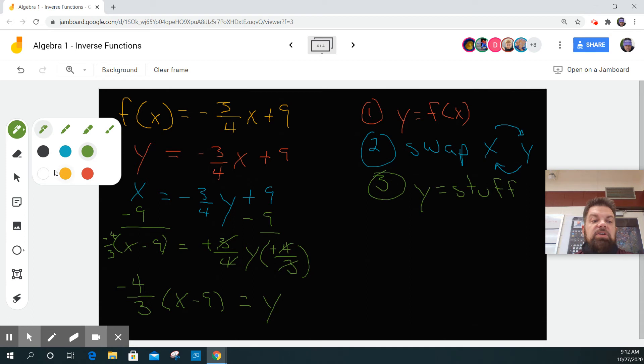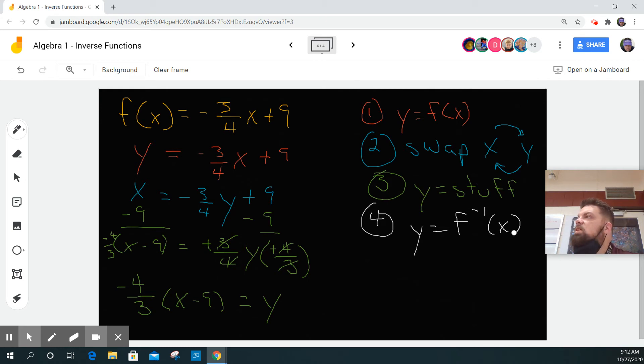The last step is now we're going to make y equal to the function notation for inverse functions. That superscript negative one just means it's the inverse function, that we're undoing what's being done. So then we rewrite this as the inverse function as negative four thirds times x minus 9.